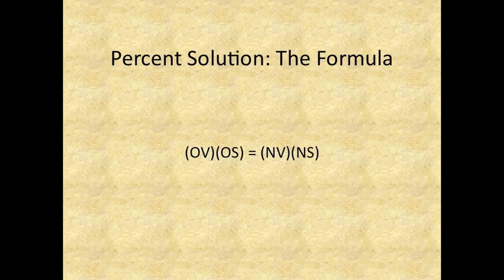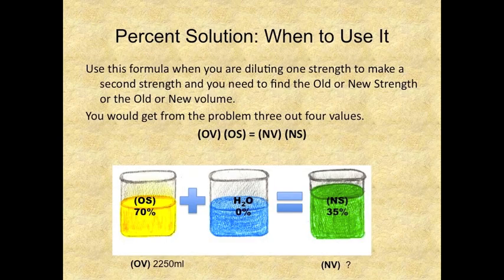The second formula is the percent solution formula: old volume times old strength equals new volume times new strength. Use this formula when you are diluting one strength to make a second strength and you need to find either the old or new strength, or the old or new volume. You will be given 3 out of 4 values. Compared to allegations — where you are looking for both initial volumes — with this formula you are looking for any one of the four values.